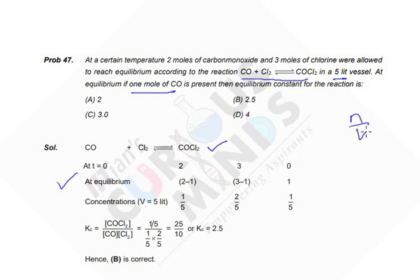Volume is 5 liter, so we have to talk about concentration. Moles upon volume, so volume is 5 liter. So concentration is 1 by 5, this is 2 by 5, this is 1 by 5. So now concentration is found. Now equilibrium constant, there is no problem.